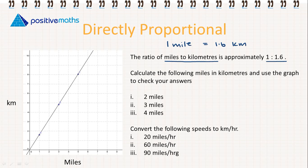We need to calculate the following miles in kilometers and use the graph to check your answers. From the ratio we know that one mile is equal to 1.6 kilometers. So therefore two miles is going to be 1.6 multiplied by 2 which is going to give us 3.2 kilometers.